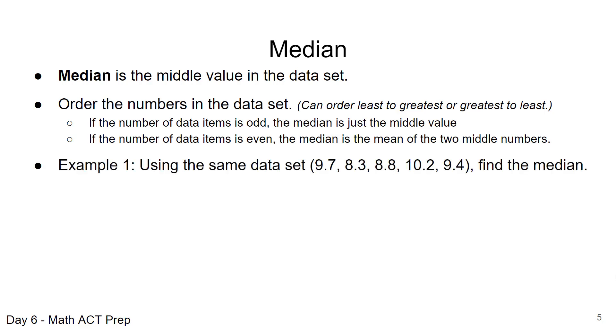Here's an example. We're going to use the same data set from the mean example. Find the median of these five numbers. I usually order from least to greatest. That's what I did with these values and we have a clear middle number. That 9.4 is in the third position because we have an odd number in our data set.